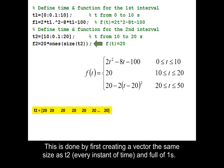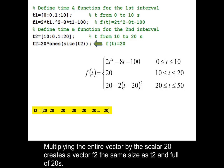This is done by first creating a vector the same size as T2 every instant in time and full of ones. Multiplying the entire vector by the scalar 20 creates a vector F2 the same size as T2 and full of 20s.